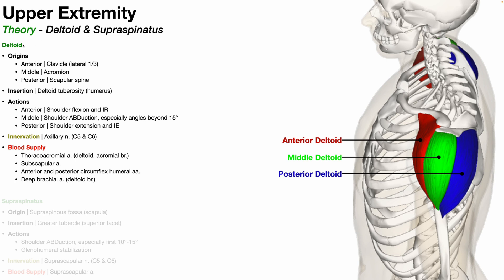We're going to begin by talking about the deltoid, which you can see in these three colors on the right side of the screen. Here is the left deltoid, and the picture pretty well divides the anterior, middle, and posterior deltoids. The deltoid is divided into three regions, but it's important to understand that it's divided into those regions functionally, not anatomically.